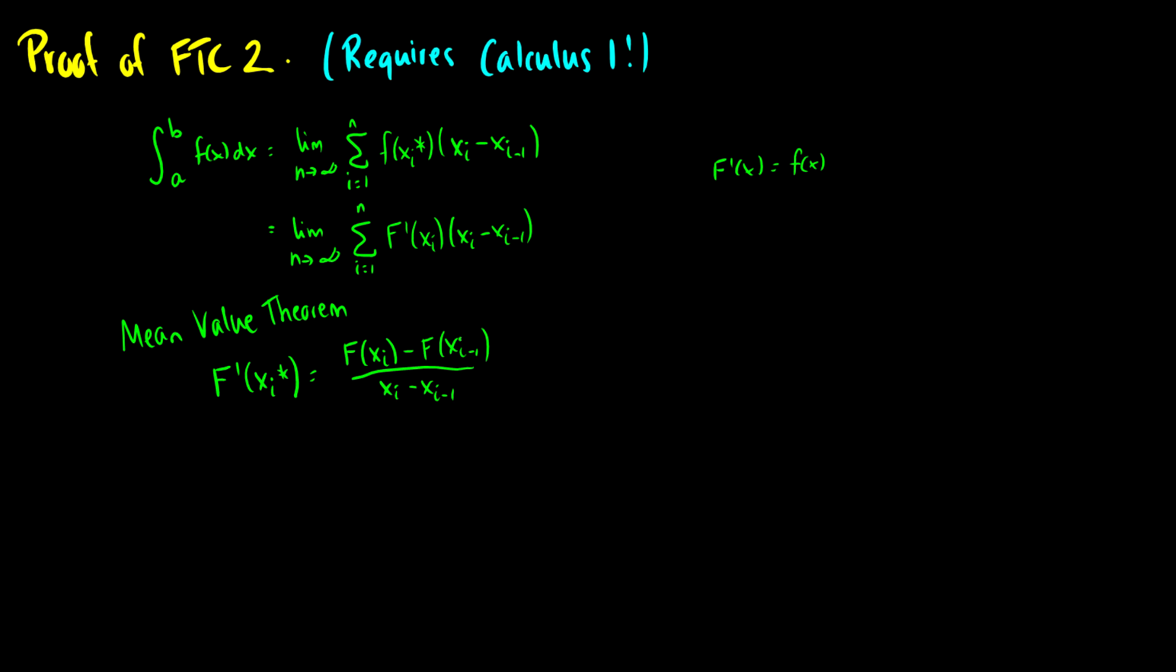And now what we can do is—I forgot a star here—we can just take the denominator on the right side and move it over to the left side. So we have f prime of x_i* times x sub i minus x sub i minus 1 equals f of x_i minus f of x_i minus 1.